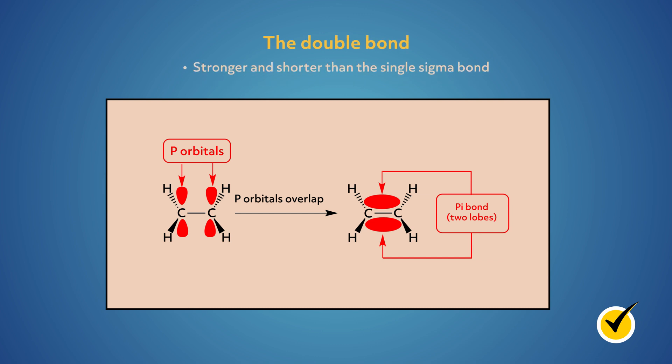The double bond, which is a sigma bond plus a pi bond, is stronger and shorter than the single sigma bond. It also restricts the rotation of the molecule.